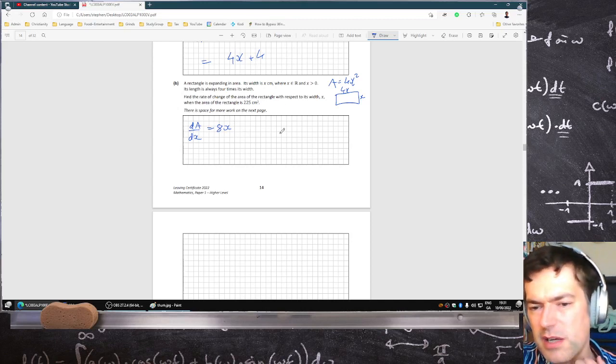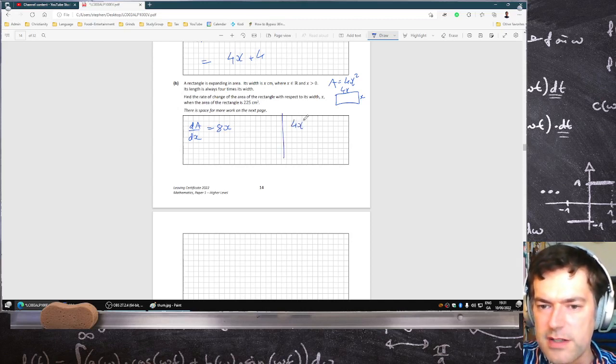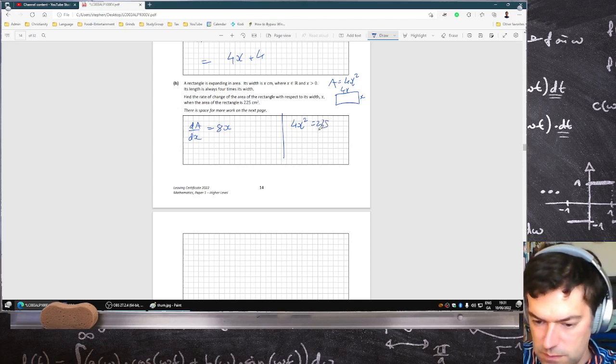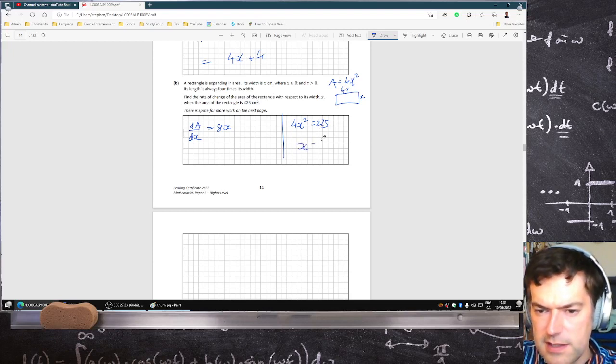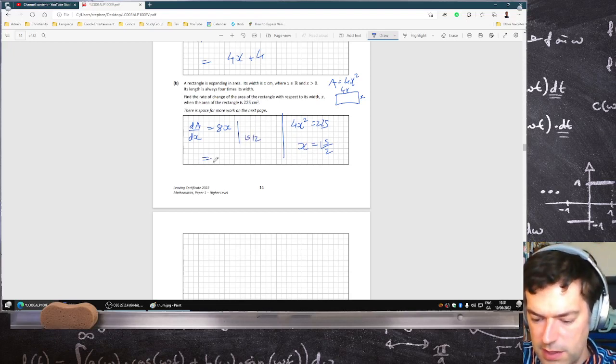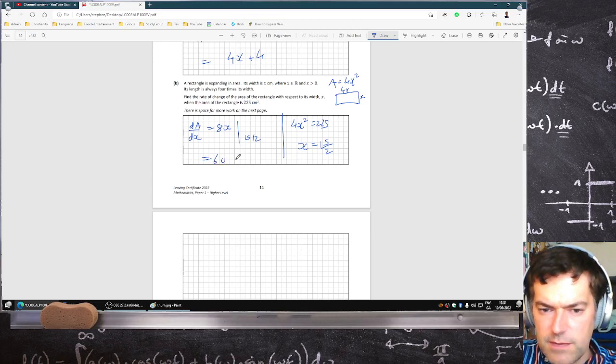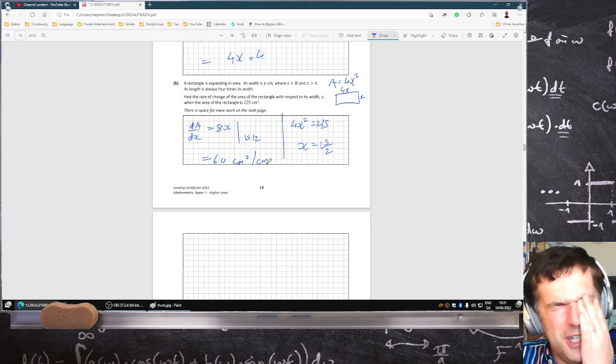But we have to work out what the x is, so we have four x squared equals 225. So the x is 15 over two, so at 15 over two, this would equal 60 centimeters squared per centimeter, weirdly. So in other words, 60 centimeters, it's kind of a weird unit.